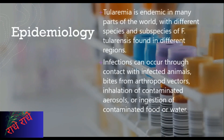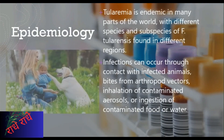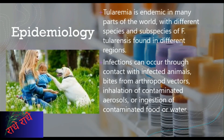This slide provides an overview of the epidemiology of tularemia. Tularemia is a disease caused by gram-negative bacteria Francisella tularensis. It is widespread in many parts of the world, causing infection in humans and animals alike. The disease can be spread by contact with infected animals, bites from arthropod vectors, inhalation of contaminated aerosols, or ingestion of contaminated food or water.